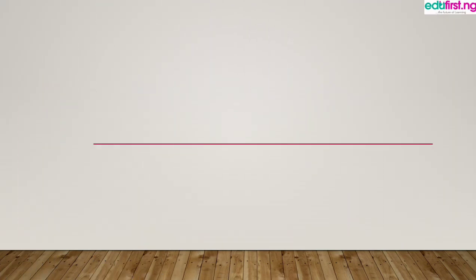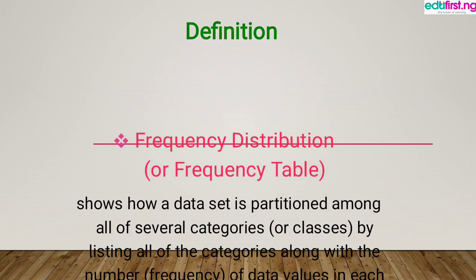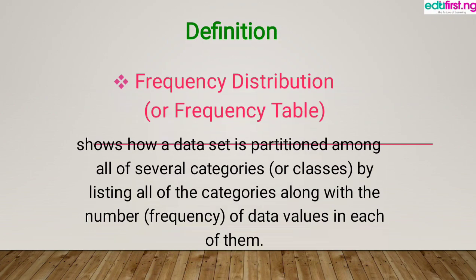At the end of the class, students are expected to be able to present data using a frequency distribution table. Now let's begin with the definition of what a frequency distribution table is. It shows how a data set is partitioned among all the several categories or classes by listing all the categories along with the numbers, which are the frequency of data values in each of them.